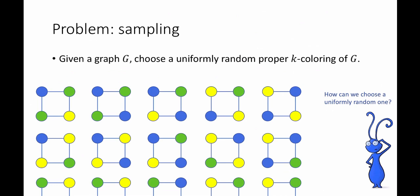Another way you might try is to choose a completely random coloring — just color all the vertices random colors — and repeat again and again until you get a proper coloring, that is, until no two adjacent vertices have the same color. That will yield the correct distribution, but it might also take a really long time. For example, if G is a clique on N vertices, the expected number of times you have to recolor turns out to be exponential in N.